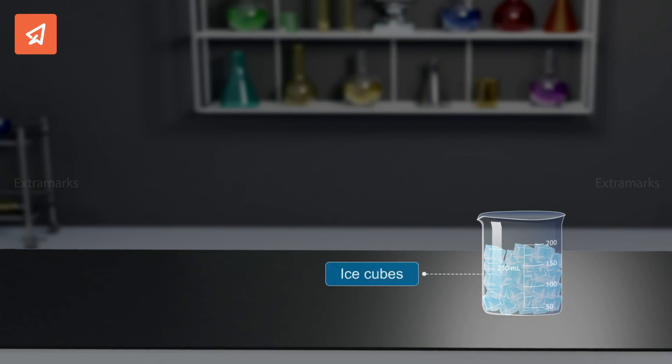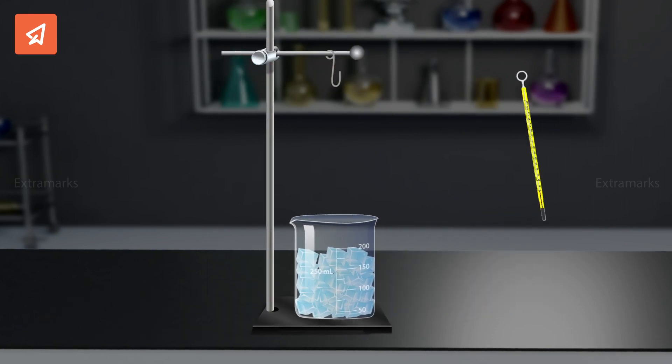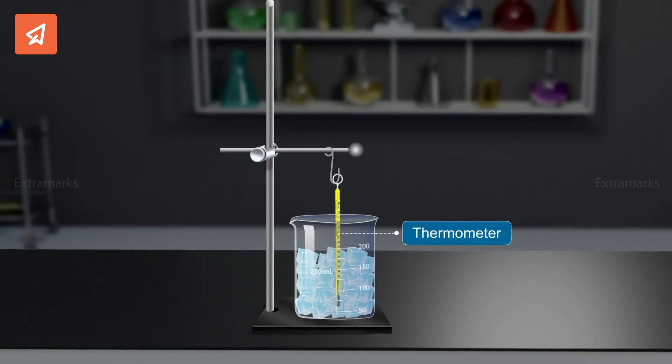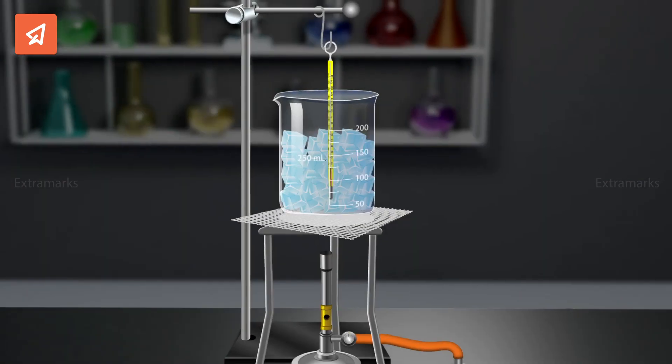Take a beaker with some ice cubes and place a thermometer in it. Now place the beaker on the tripod stand. Now heat the beaker by lighting the burner.